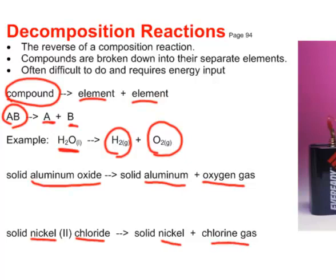If we wanted to draw the formulas for these, we certainly could. Aluminum oxide. Al, now aluminum is plus three. Oxygen is minus two. So that's Al2O3. Solid aluminum is just solid aluminum. Oxygen gas of course is O2 and it's a gas.